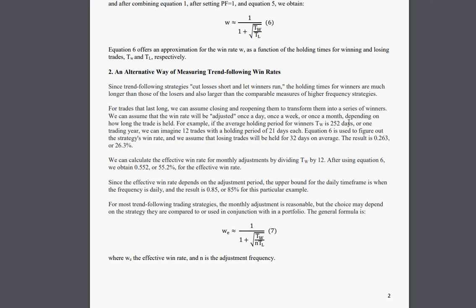Then we imagine 12 trades with a holding period of 21 days each. And also, if we assume that the losing trades are held for 32 days on average, which comes from a strategy I had tested, then the win rate is about 26.3 percent. Now if we account for the rebalancing and we calculate the effective win rate, we get 55.2 percent instead of 26.3 percent. It's more than double. So this is the idea.